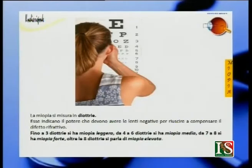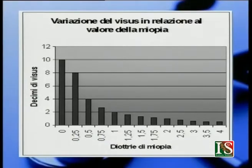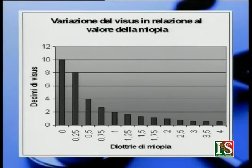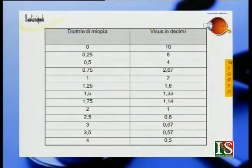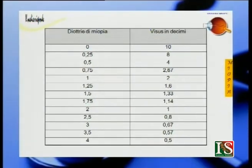La vista si esprime in decimi. Se un soggetto è normale, ha 10 decimi di vista. Ma se un soggetto ha solo 0,25 diottrie, i decimi diventano già 8. Con 1 diottria di miopia si hanno solo 2 decimi di vista. Con 2 diottrie si ha 1 decimo di vista. Con 3 diottrie si ha 0,67 decimi. Con 4 diottrie, il visus in decimi è 0,5.